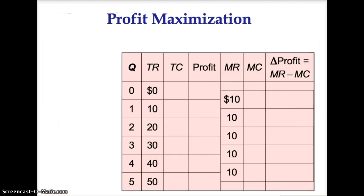Let's look at a table of data to determine the quantity a firm should produce to maximize profit. Quantity runs from 0 to 5. Total revenue, TR, and total cost, TC, are given. I suggest pausing the lecture and solving for profit, marginal revenue, marginal cost, and the change in profit to ensure that you can do the calculations on your own.